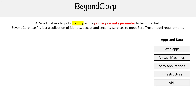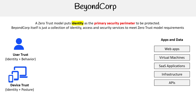On the left-hand side we have user trust and device trust. For users, we look at their identity and their behavior. For devices, we look at identity and posture — posture being the conditions of the environment they're in.